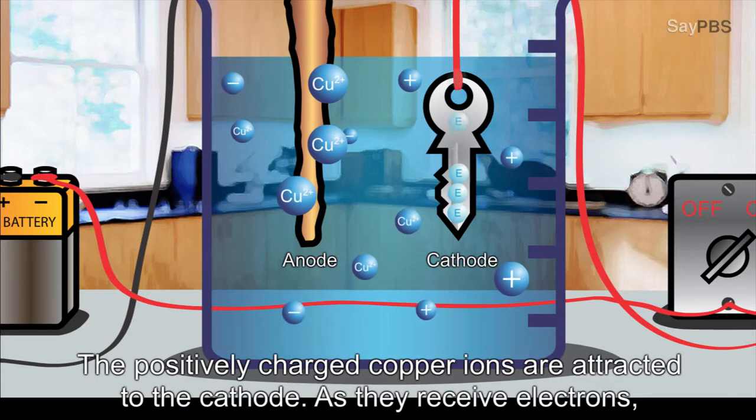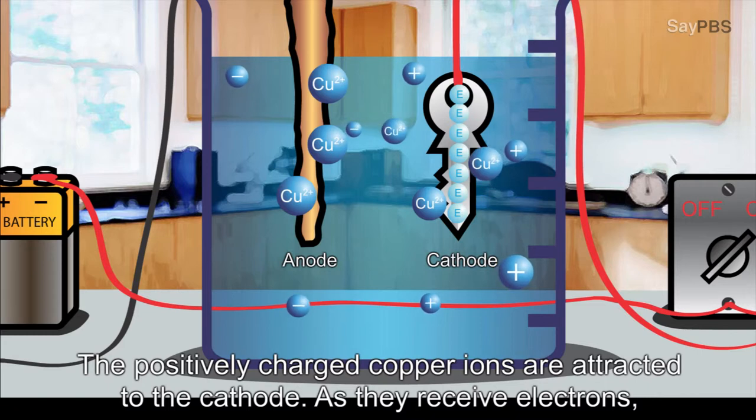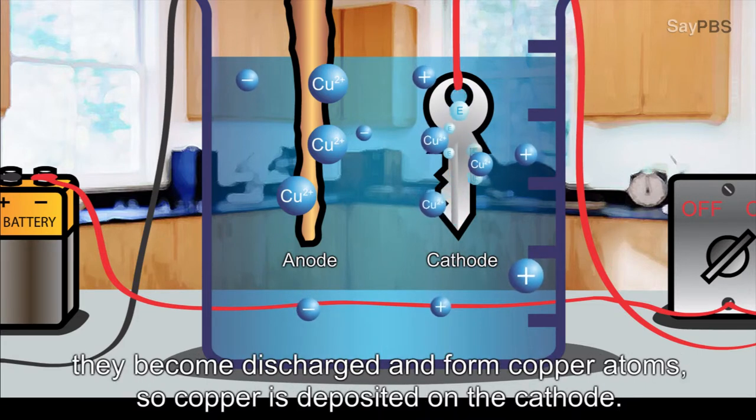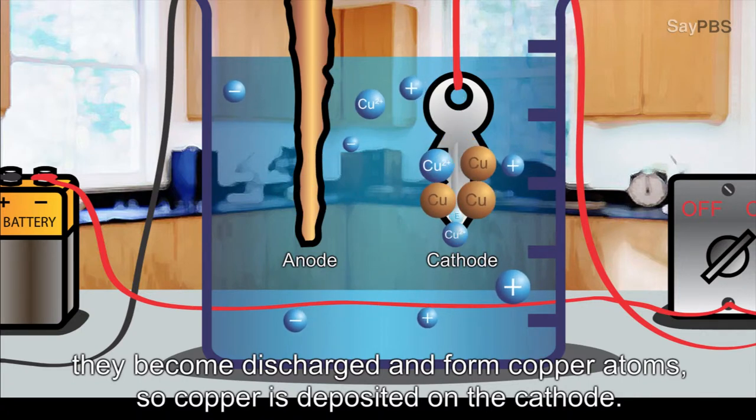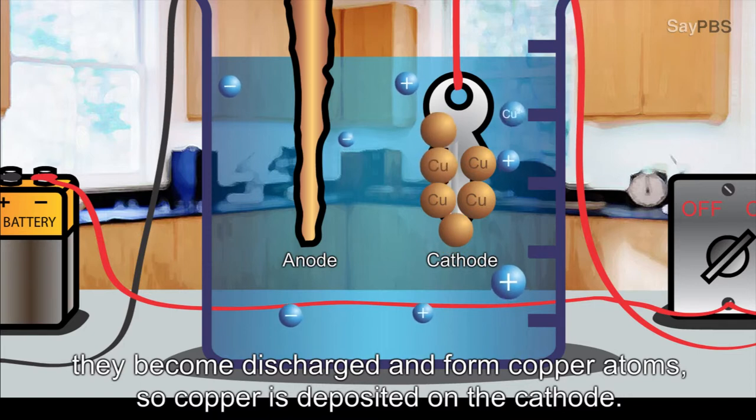The positively charged copper ions are attracted to the cathode. As they receive electrons, they become discharged and form copper atoms. So, copper is deposited on the cathode.